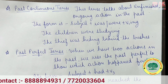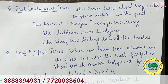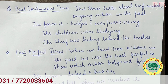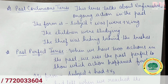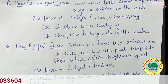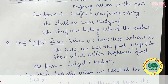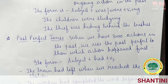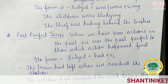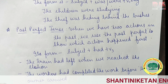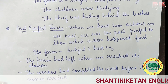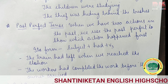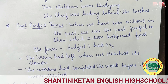Past continuous tense talks about an unfinished, ongoing action in the past. The form is subject plus was/were plus V1+ing. For example: 'The children were staring.' 'The thief was hiding behind the bushes.'